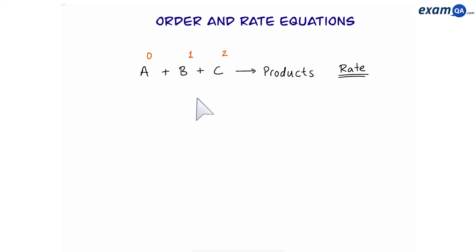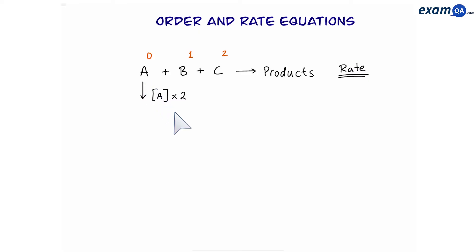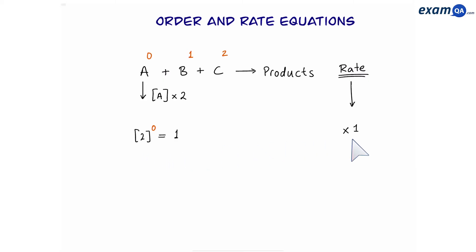In this reaction, A has zero order, B has first order, and C has second order. Let me show you what it means to have zero order. Let's say we double the concentration of A, and for this example we're not changing B or C. So we've doubled A, that means we're going to do two to the power of zero. This equals one, which means the rate will be times one — in other words, the same speed. So we saw that doubling A had no effect on the rate.